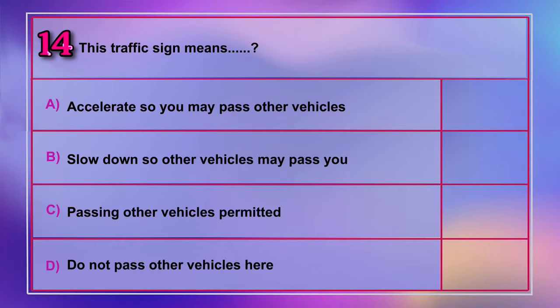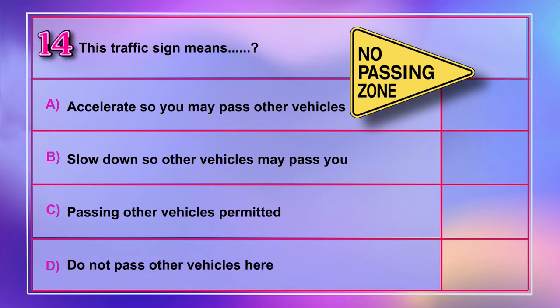Question number 14: This traffic sign means A) accelerate so you may pass other vehicles, B) slow down so other vehicles may pass you, C) passing other vehicles permitted, D) do not pass other vehicles here.